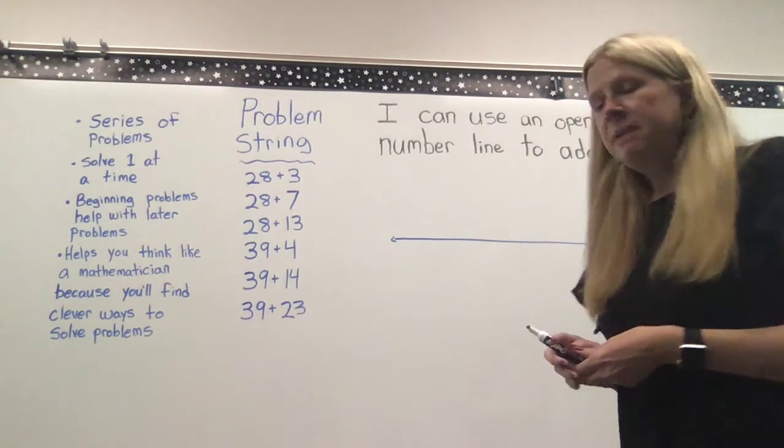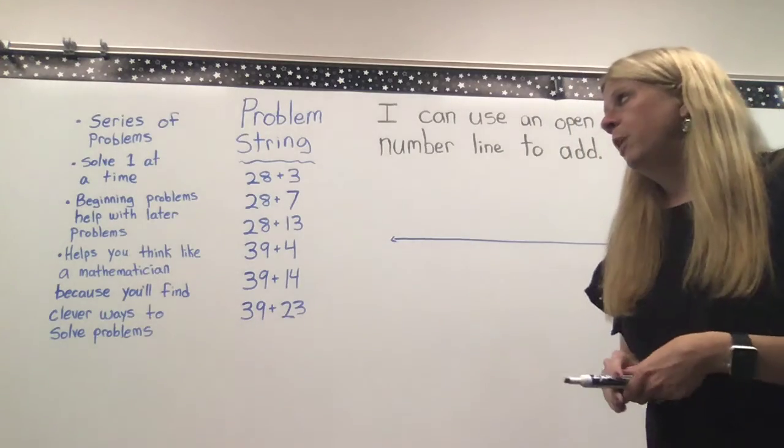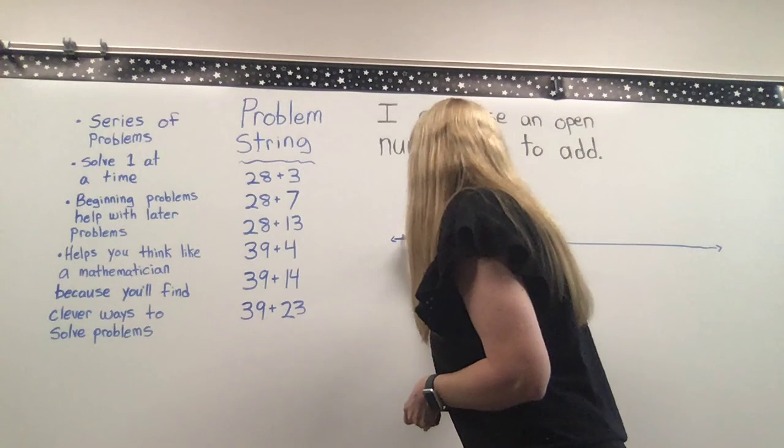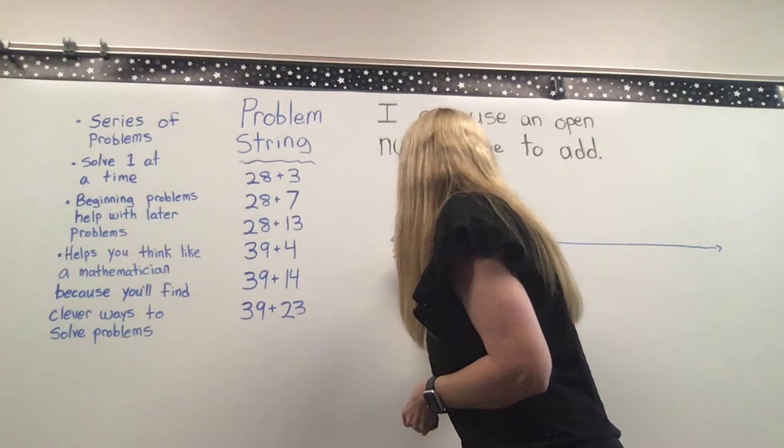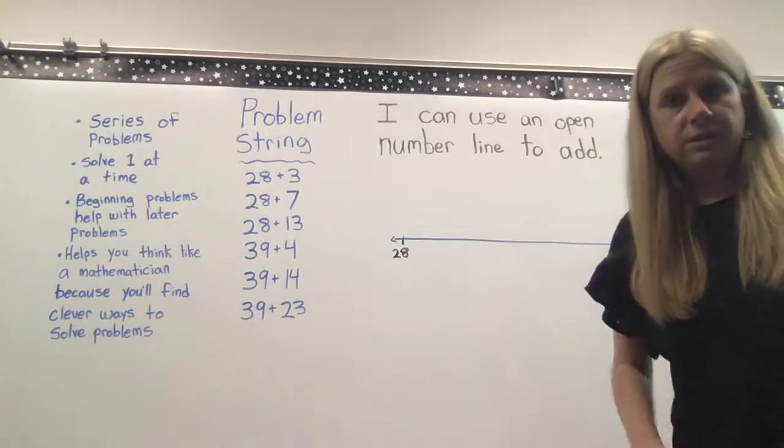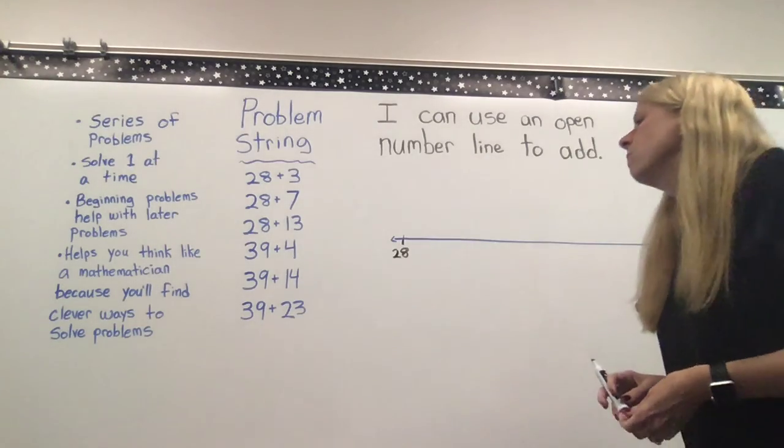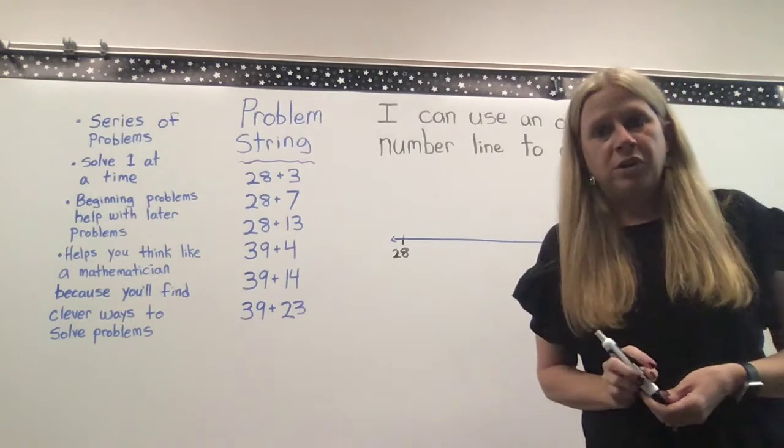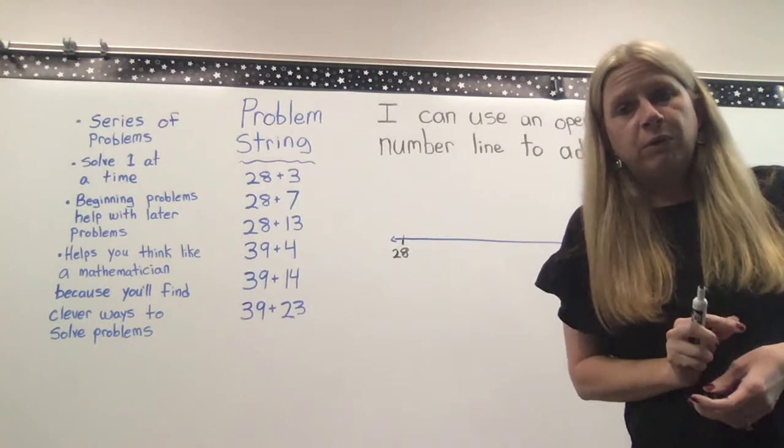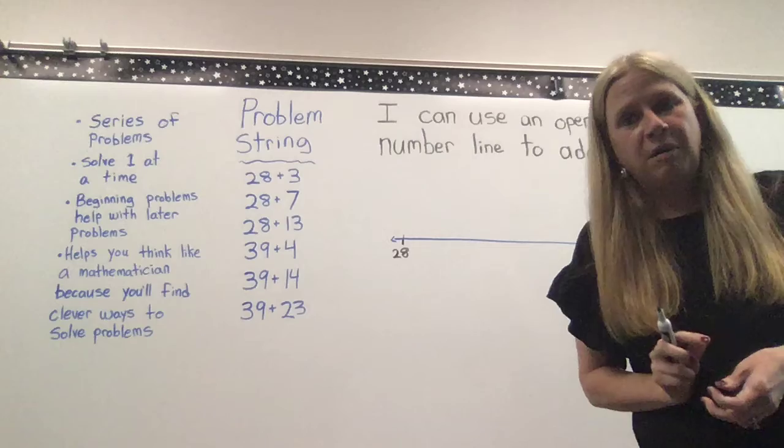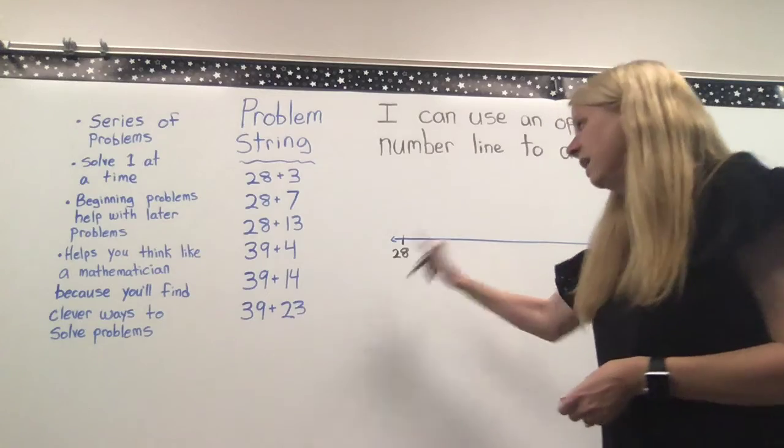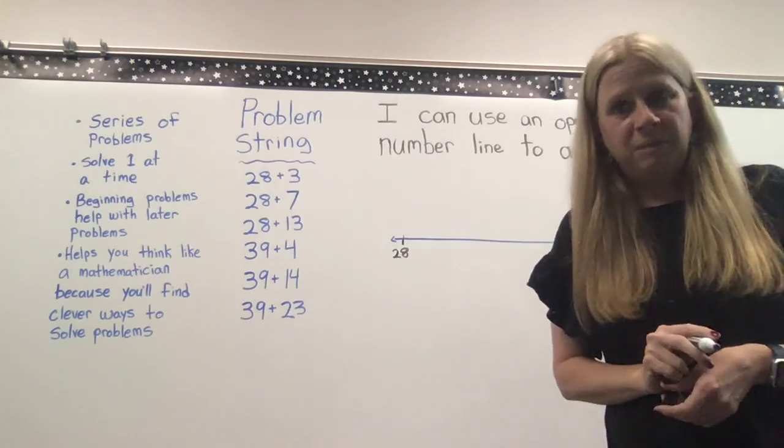So let's begin. We're going to start with a simple problem, 28 plus 3. So I'm going to put a 28 at the beginning of my open number line. And we're going to pretend that we don't know the answer to 28 plus 3. So one thing that is really helpful when you're adding on a number line is to get yourself to a friendly number, or what I also like to call a nice neat number. And those are numbers that end in zero. So if I start at 28, the closest friendly number is 30.